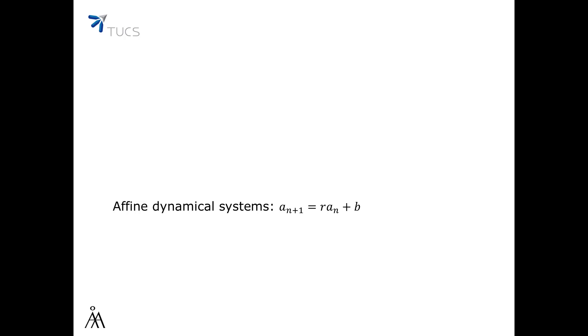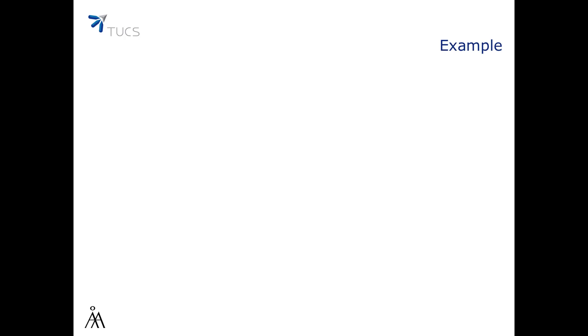Let's consider now the general form of linear dynamical systems where there is also a free term b. Such systems are also called sometimes affine dynamical systems. We already had a few examples of such dynamical systems in the previous video. Here is one more example where they are useful.